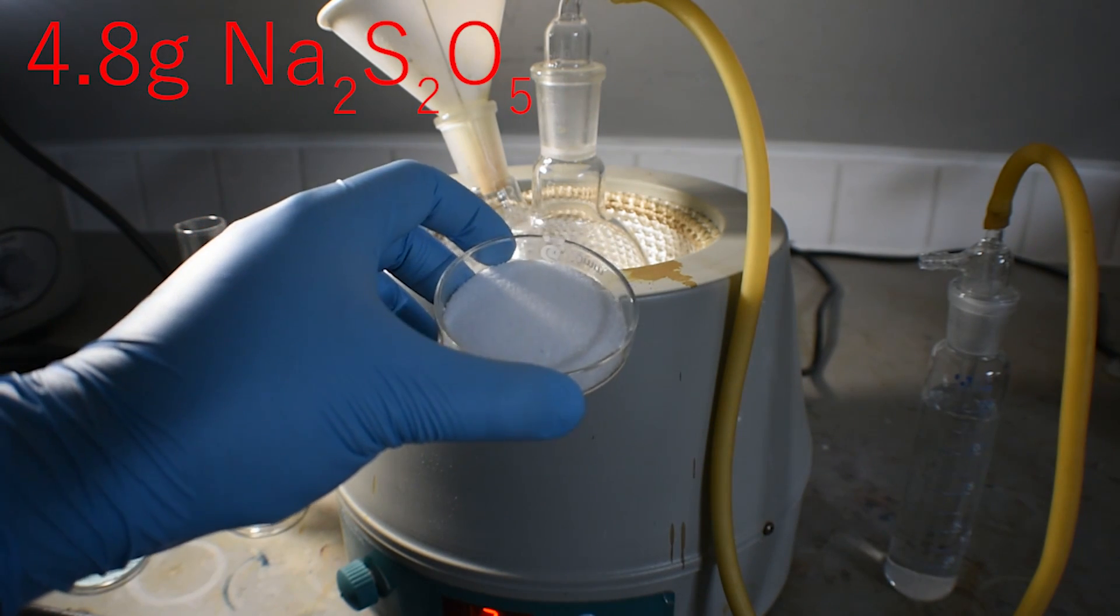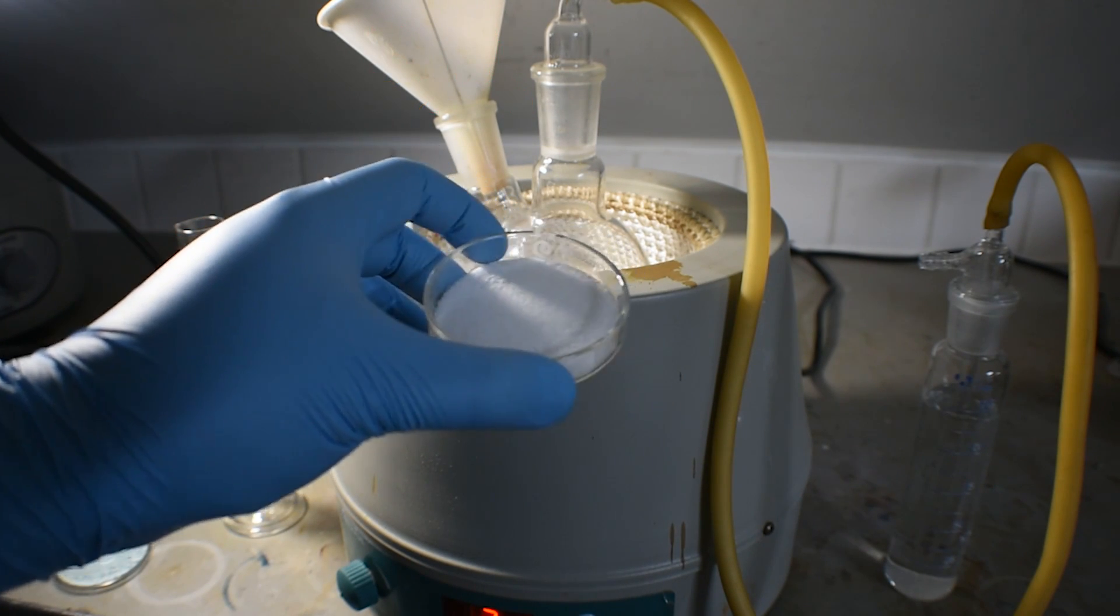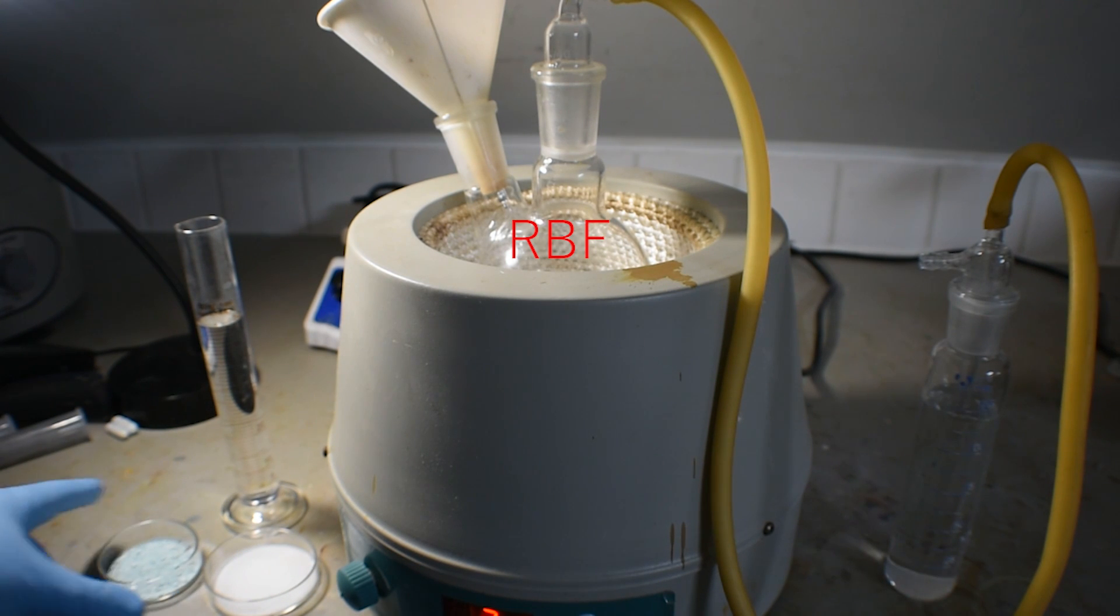which I'm going to combine in a 250ml two-necked round-bottom flask, which has one arm stoppered, while the other arm is occupied by a gas takeoff adapter, leading to a wash bottle filled with about 10% hydrogen peroxide. This serves to scrub out any sulfur dioxide which is produced in the reaction.